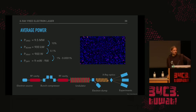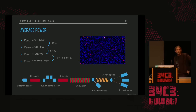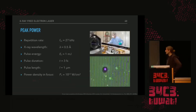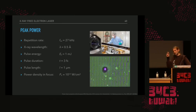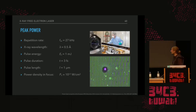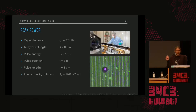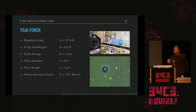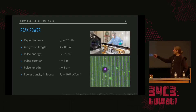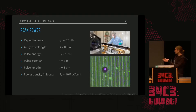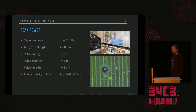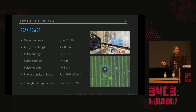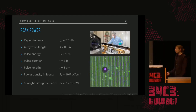The peak power is what matters. The European XFEL produces 27,000 X-ray pulses per second at a wavelength of about 0.5 angstrom, with a pulse energy of 1 millijoule and pulse duration down to 3 femtoseconds — the time it takes light to travel one micrometer. The X-ray beam can be focused to a very narrow spot, and in that focal point the power density is about 10^17 watts per square centimeter — comparable to taking all sunlight hitting the Earth concentrated on one square centimeter.